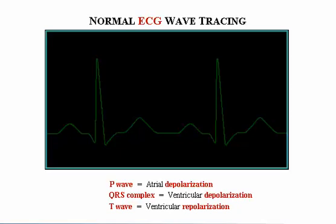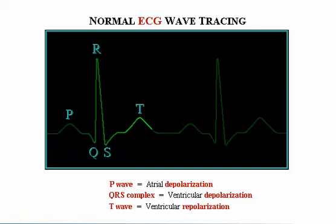In this animation we see heart electrical activity reflected in an ECG wave tracing. The P wave represents atrial depolarization, the QRS complex represents ventricular depolarization, and the T wave represents ventricular repolarization. In a normal ECG wave tracing, atrial repolarization is hidden by the QRS complex.